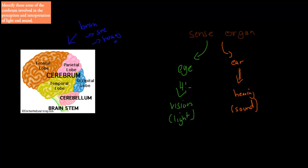The brain has different parts, and we need to discuss these over the next three videos. The next couple of videos are straightforward — we just identify different parts and say what they are used for. In terms of the actual brainstem, cerebellum, and cerebrum, these are the different parts.